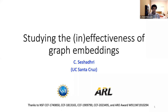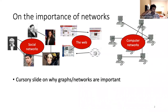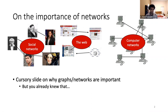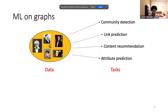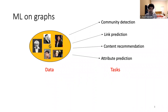First, on the importance of networks or graphs, which are a very important way of representing data. You have social networks, the web, computer networks, and so essentially representing data as graphs is very important in data science. The classic case would be social networks, which is useful to have as the archetype graph. When you have such a graph, people often want to do machine learning on it — tasks like community detection, link prediction, content recommendation, and attribute prediction.